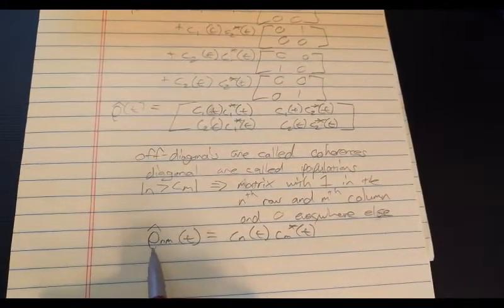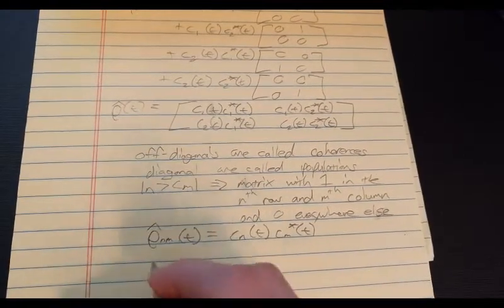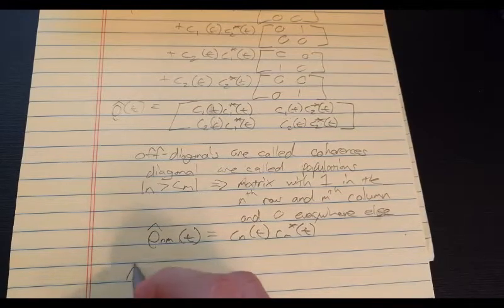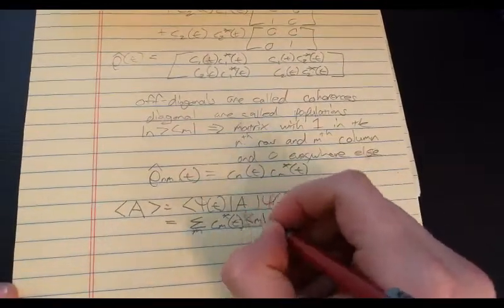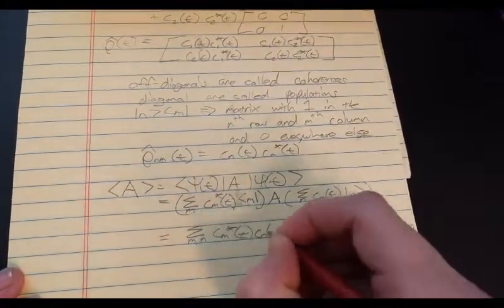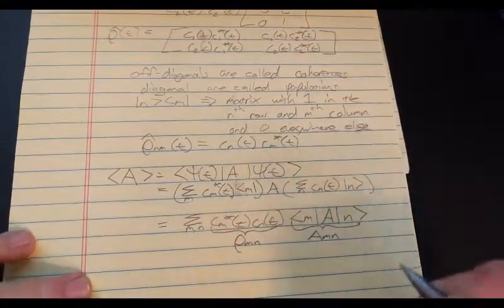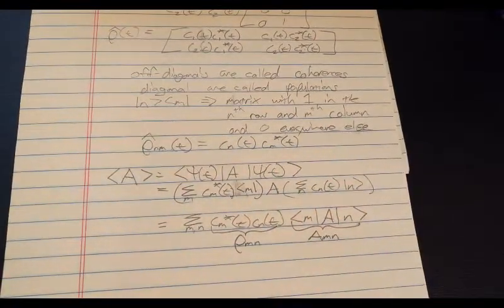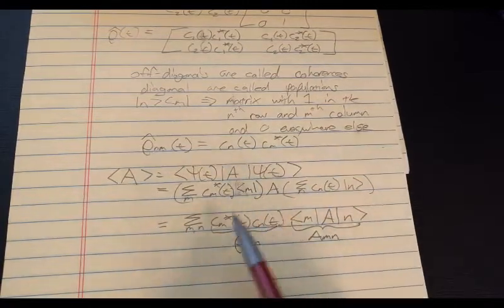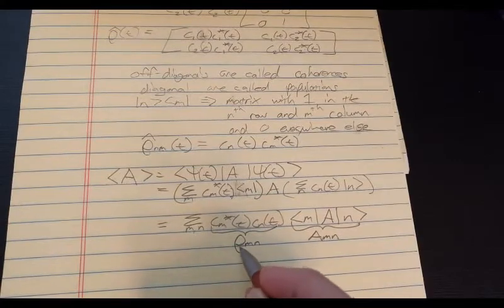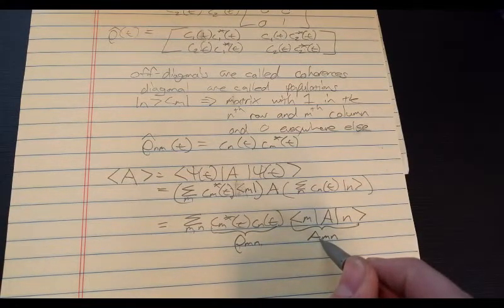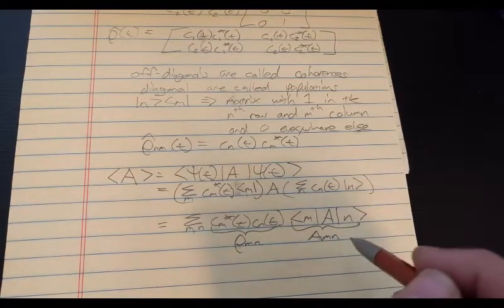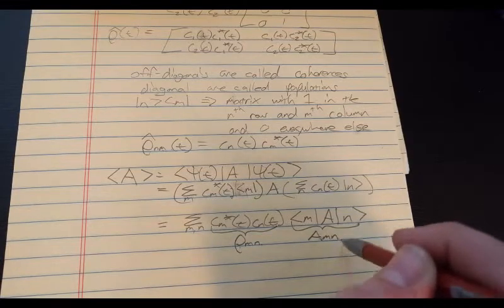Now let's use this definition of rho n m to examine the average value of an arbitrary operator A. Okay, so what we did, we examined the average value of any general operator A, and we see that it's the sum over these indices of the density matrix element rho m n times the matrix element m n of A.